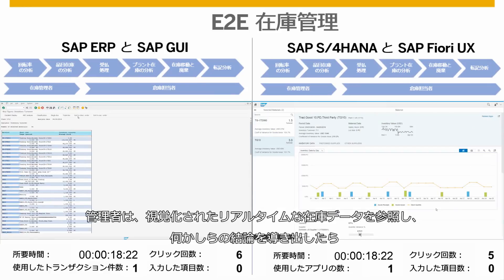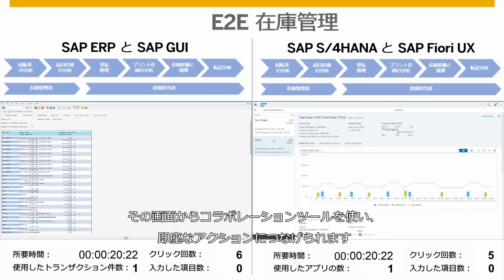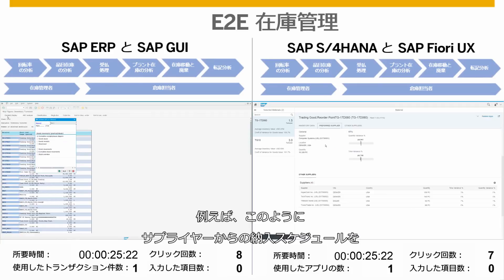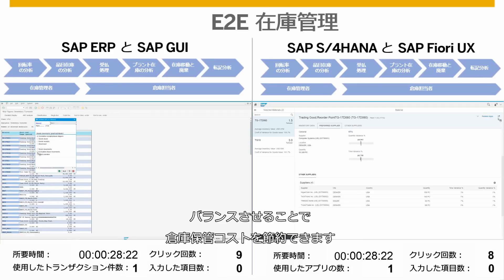The manager can use the visualized real-time data to draw conclusions and take immediate action on the same screen through the embedded collaboration tools. For example, this can be used to achieve a more balanced supplier delivery schedule, thus saving warehouse storage costs.